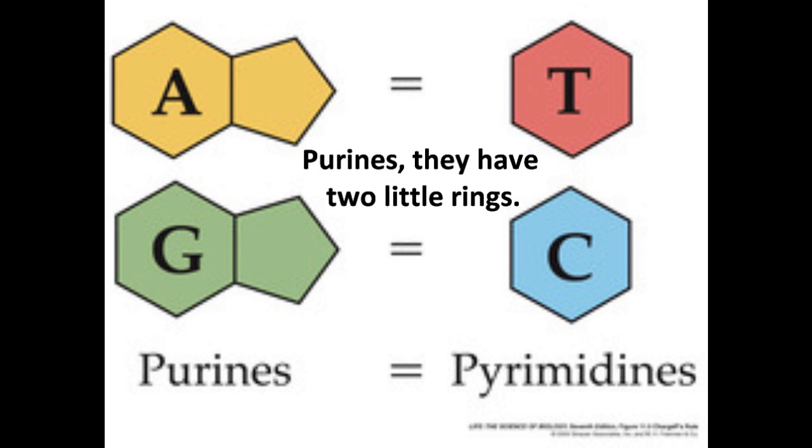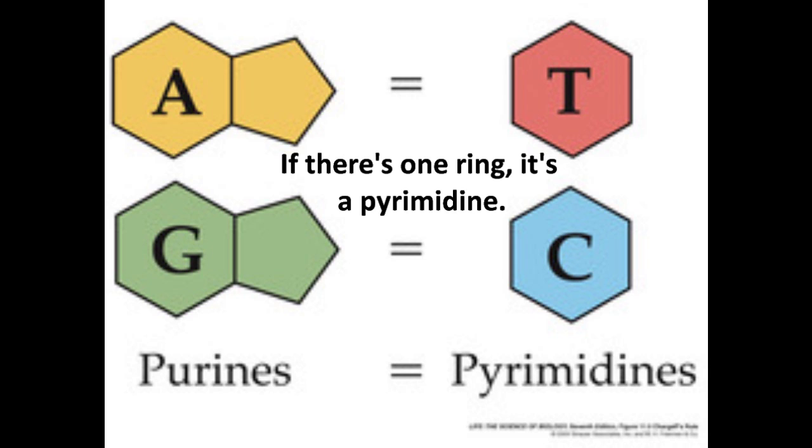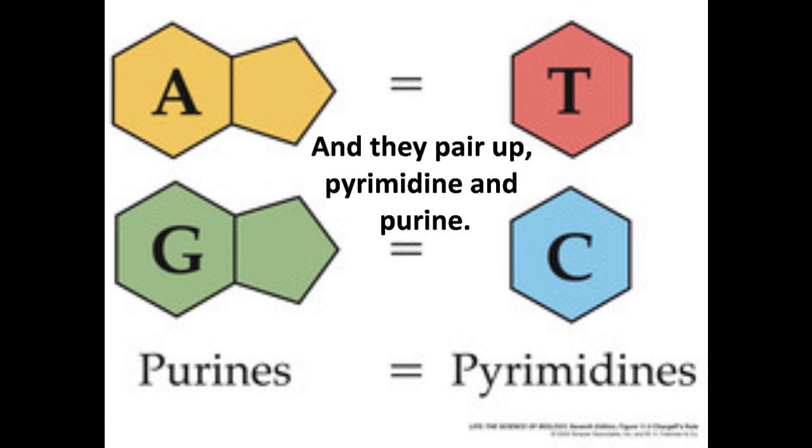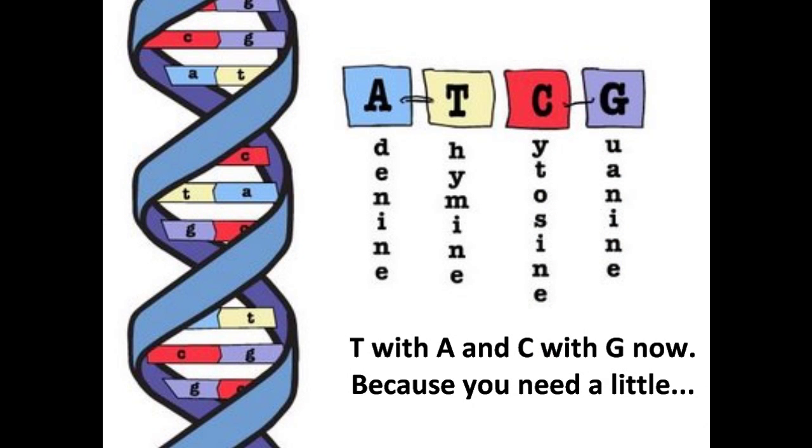Purines. They have two little rings. If there's one ring, it's a pyrimidine. And they pair up pyrimidine and purine. T with A and C with G now.